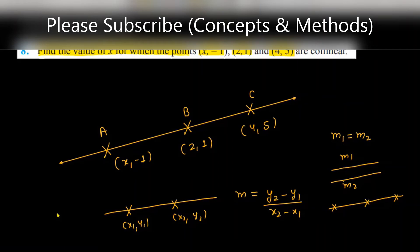Now let's apply this condition to this question. First of all, we'll find the slope of line AB. As I told you, I'll represent the slope of AB as m1.